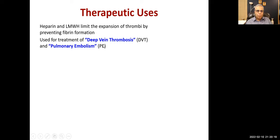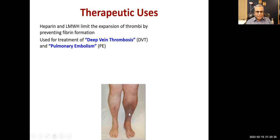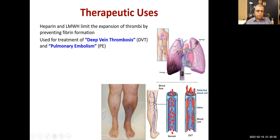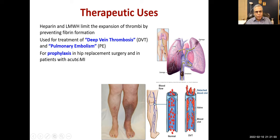Used for treatment of deep vein thrombosis and pulmonary embolism — these two are interconnected because it is mostly a piece of thrombus that breaks away, travels through the bloodstream, and causes a blockade in the lungs. Signs include leg swelling, redness, and pain. The thrombus forms along the deep vein wall of the leg and may break away causing pulmonary embolism.